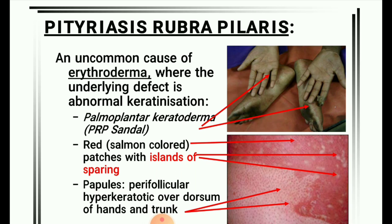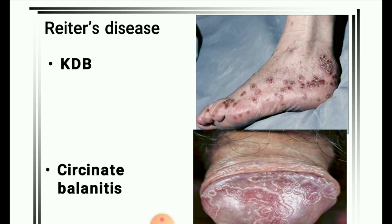Erythema marginatum in rheumatic carditis: erythematous annular plaques develop mainly on the trunk and proximal extremities, which are transient and keep coming and going. Necrolytic migratory erythema is seen with glucagonoma. Next image: Pityriasis rubra pilaris (PRP) — an uncommon cause of erythroderma where the underlying defect is abnormal keratinization, palmoplantar keratoderma. PRP shows red salmon-colored patches with islands of sparing, perifollicular hyperkeratotic papules on hands and trunk.